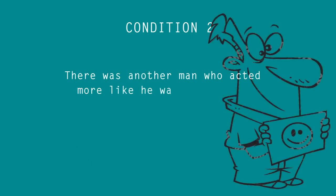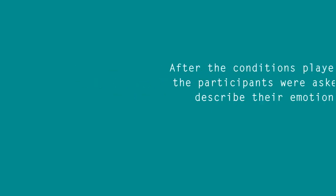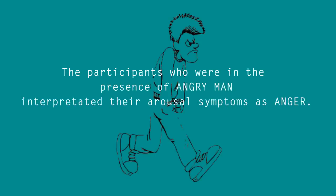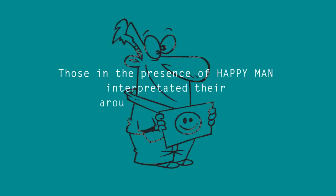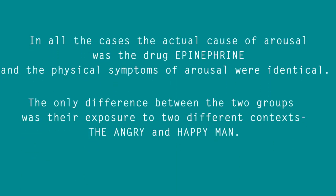In the next condition, there was another man who acted very happy, playing with some objects in the room. The angry man and the happy man in both conditions deliberately behaved in two different ways as part of the experiment. After the conditions played out, the participants were asked to describe their emotions. Those in the presence of the angry man interpreted their arousal symptoms as anger, whereas those in the presence of the happy man interpreted their arousal as happiness.